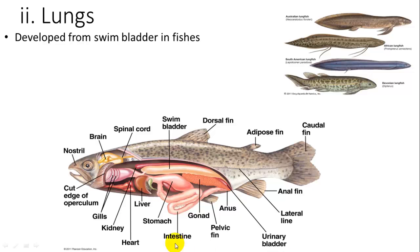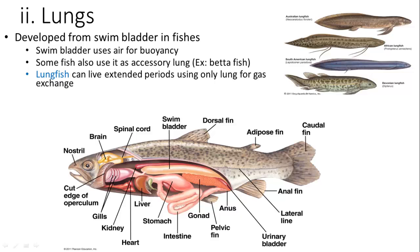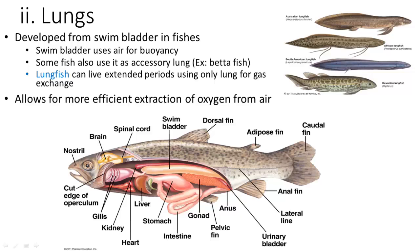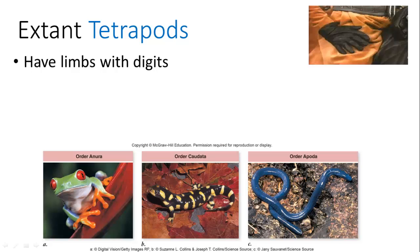Lungs developed from an organ in fish called the swim bladder, which was mostly used for buoyancy, but some fish can gulp air and store it in their swim bladder — a rudimentary lung essentially. Lung fish can live extended periods using only lungs for gas exchange. They can even burrow into holes in the ground when it gets dry and remain dormant until waters return. This allows for more efficient extraction of oxygen from air, rather than gills which collapse on top of each other.